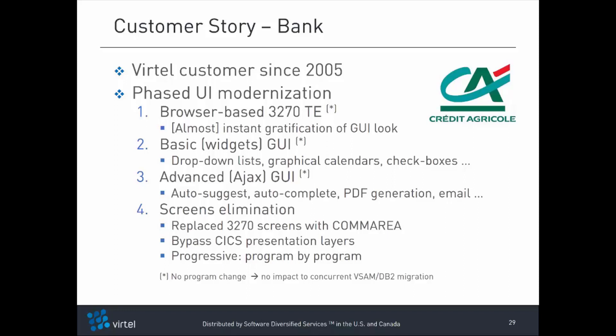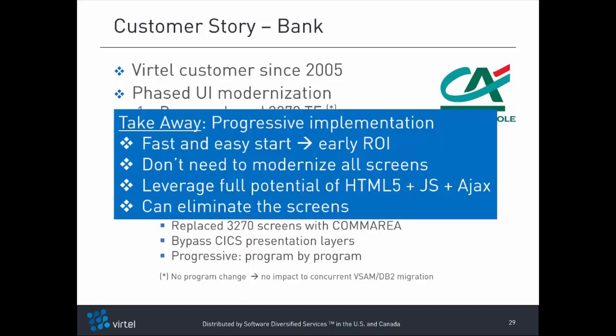With Virtel web modernization they were able to implement that change progressively, one program at a time, and without impacting the look and feel of the GUI. The takeaway is that with Virtel modernization, a progressive implementation is possible. Starting is fast and easy and brings an almost immediate return on investment. You don't need to modernize all the screens — you only modernize the most used screens and leave the others with a GUI look but basic 3270 data screen entry until you have time to modernize those other screens too. You can take full advantage of HTML5, JavaScript, and Ajax, and eventually you can eliminate the screens entirely.